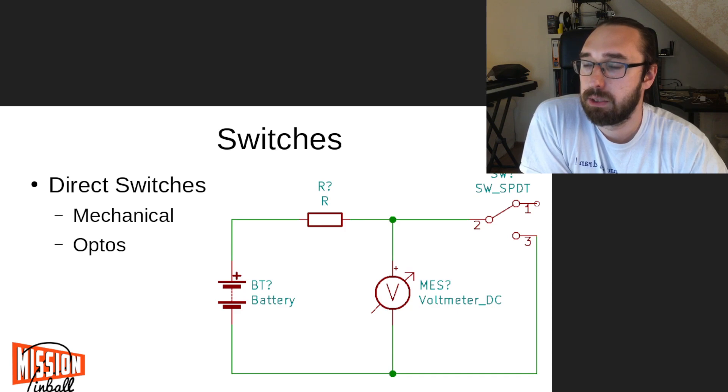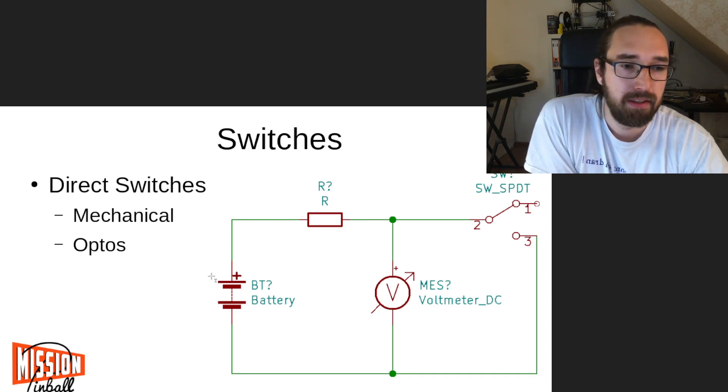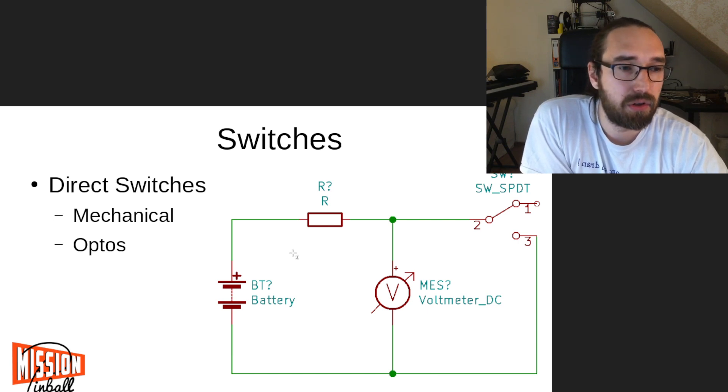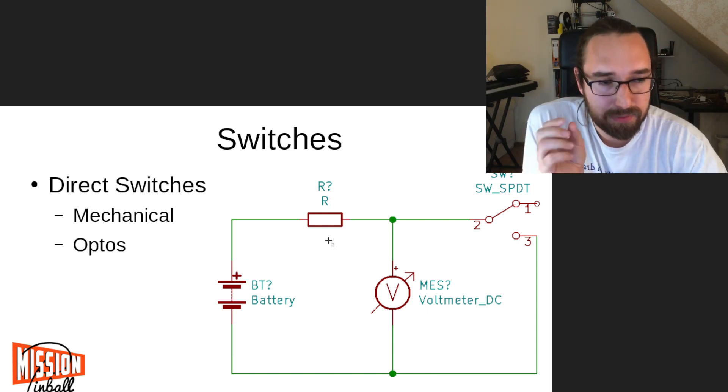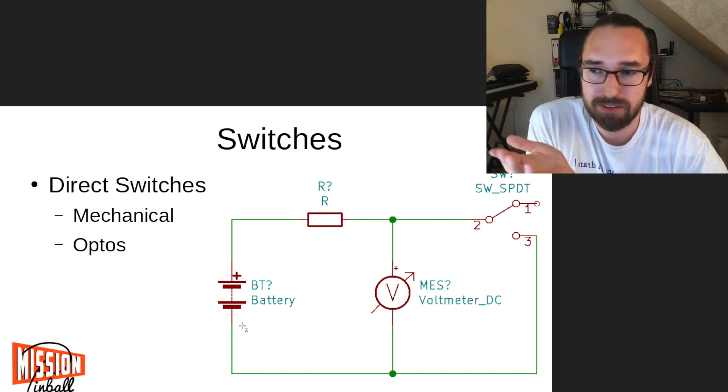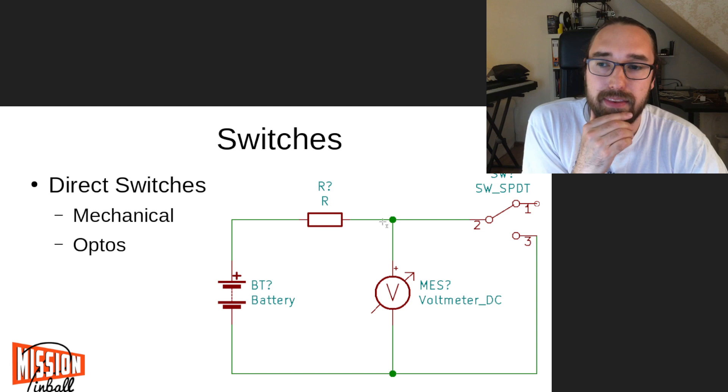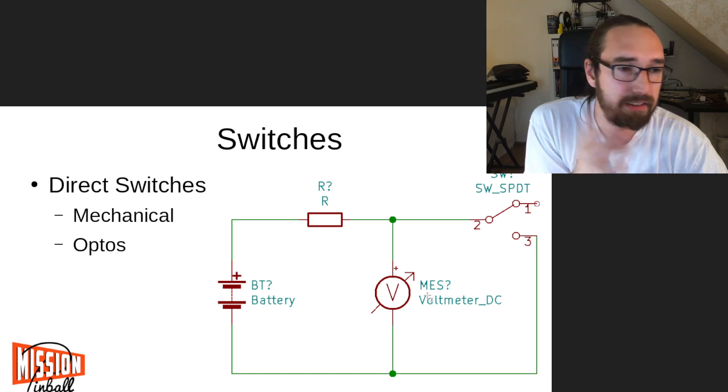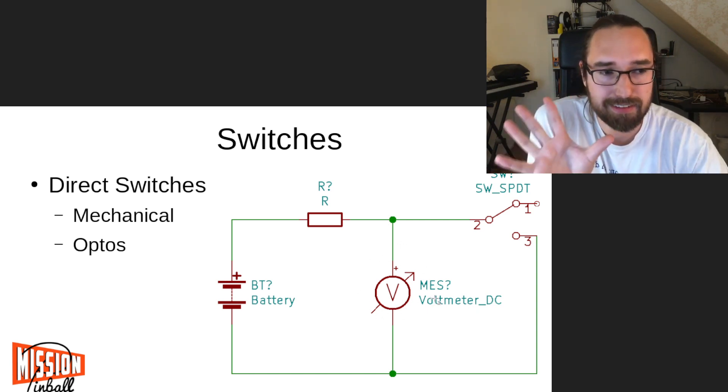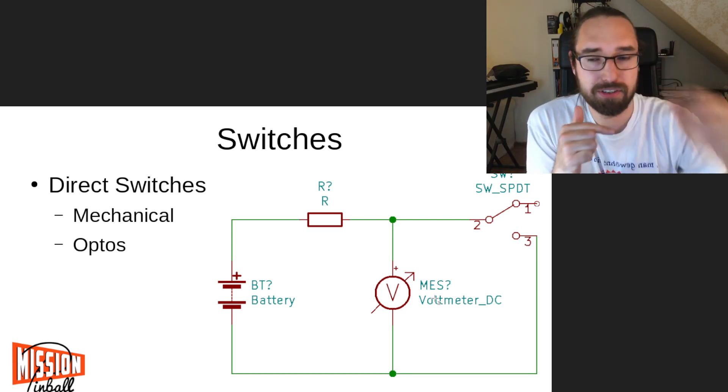For direct switches, that's super simple. You got your power supply here, and then you got a so-called pull up. There's a resistor which keeps the voltage up to the 12 volts. So let's put this as 12 volts. And there's a resistor which keeps the voltage up. And then there's the input, that's a voltmeter. It's just an input, so there we sense the voltage.